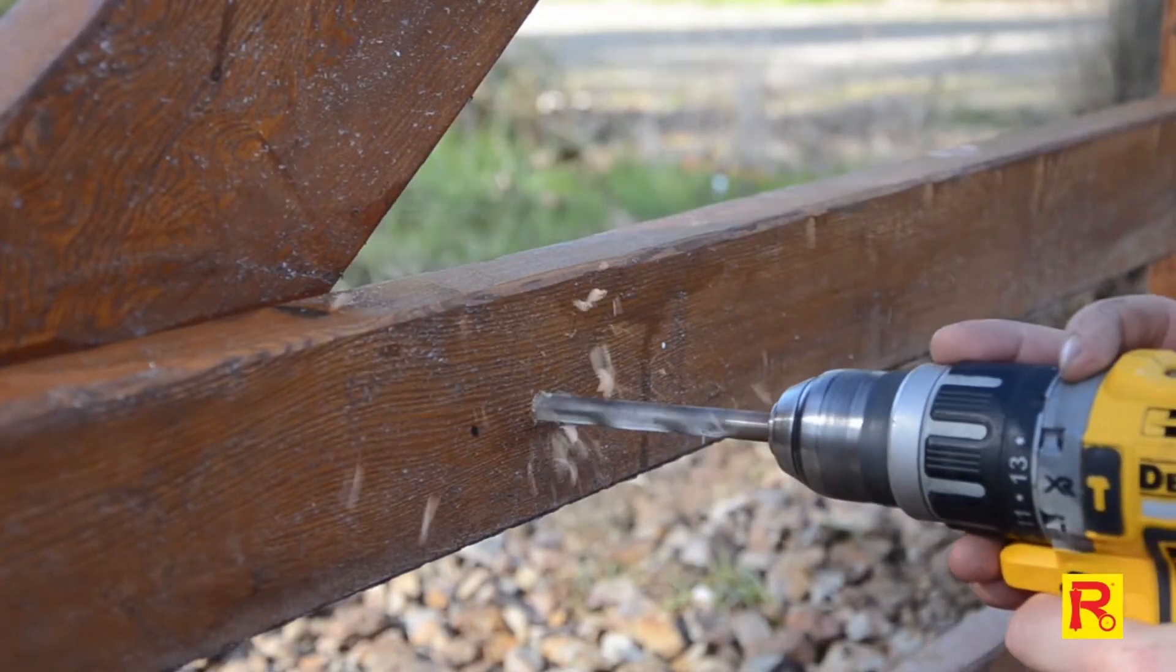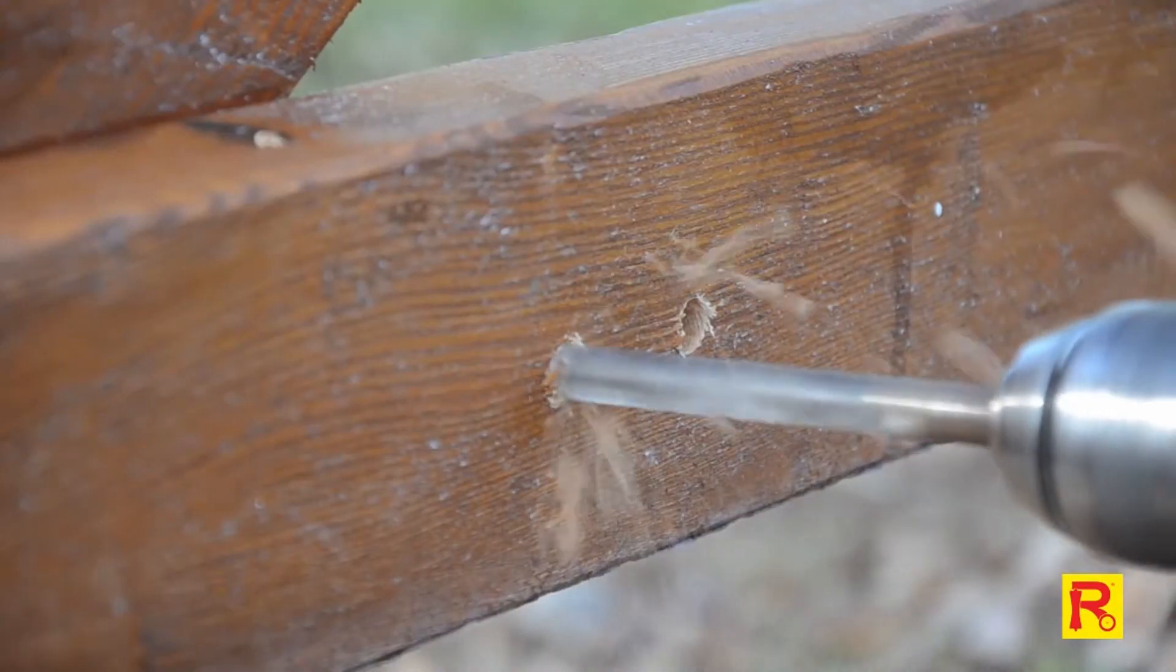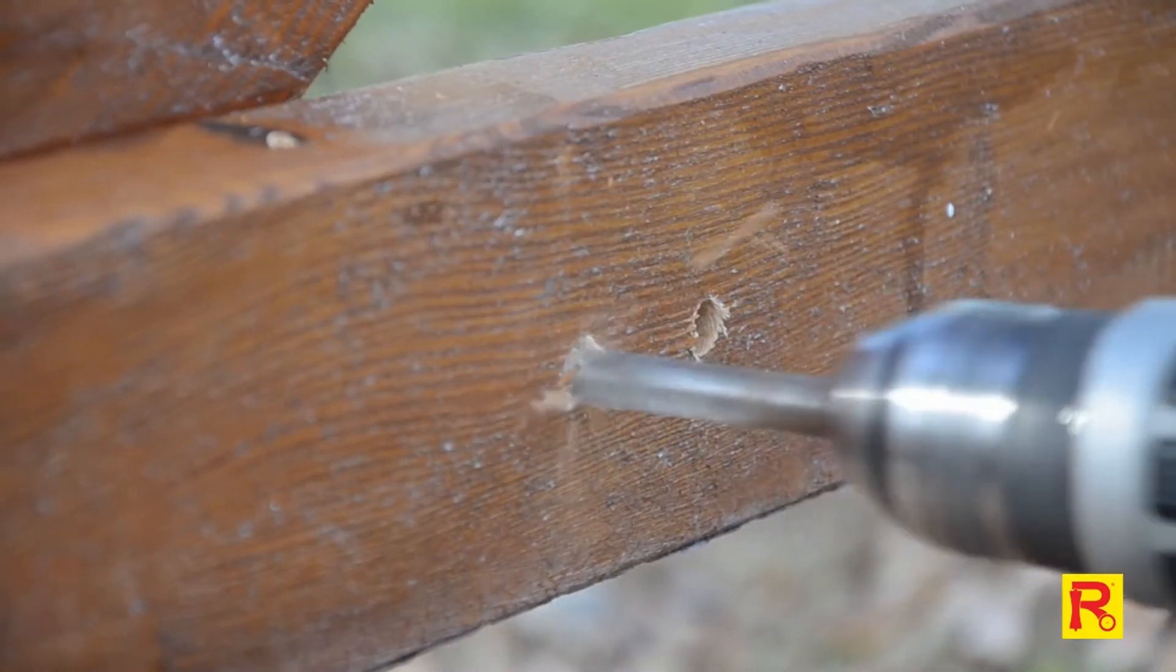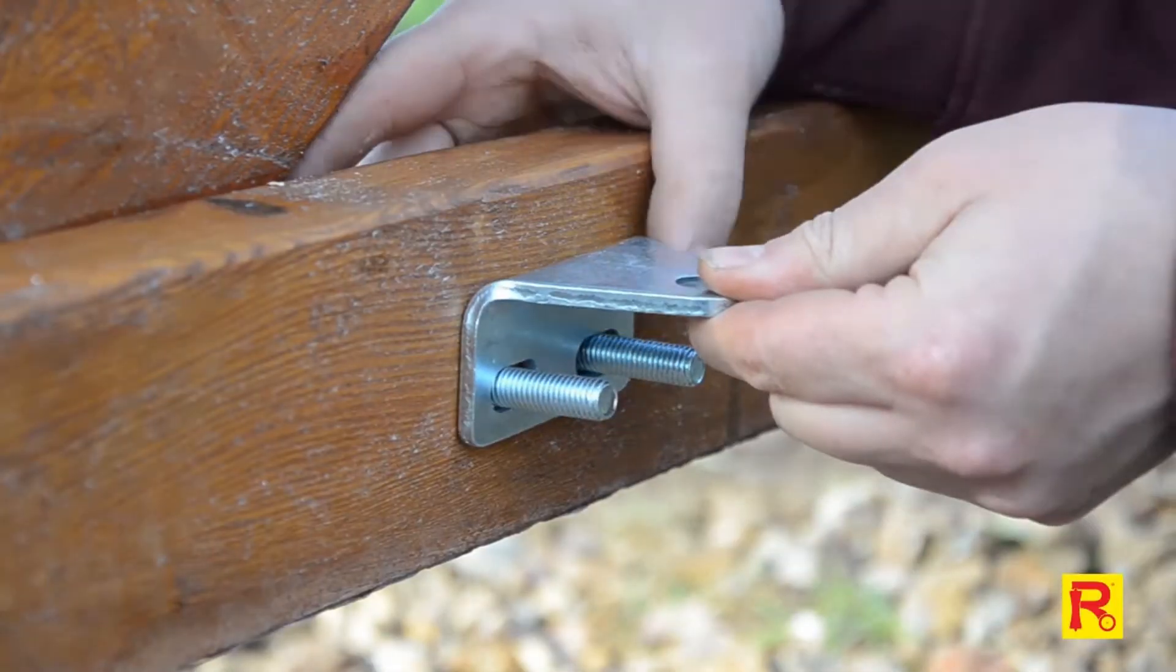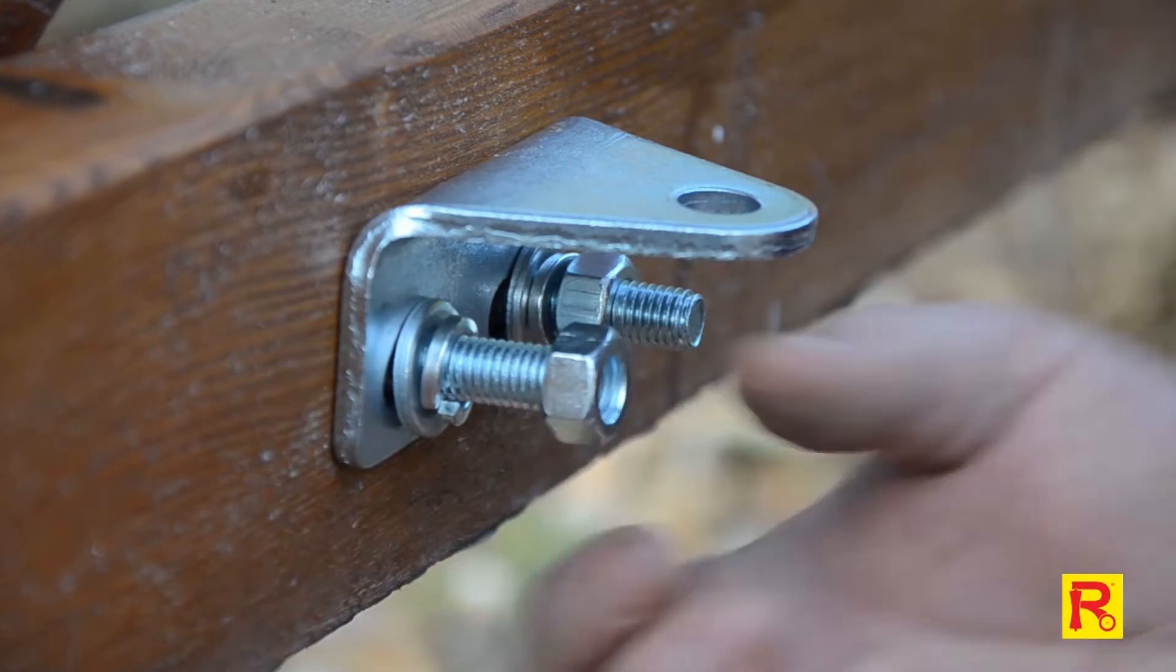Then, drill 10.5mm holes at the marked locations on your gate for both of the gate arms. Hand tighten the gate bracket to your gate with the supplied 75mm M10 bolts, washers and nuts.